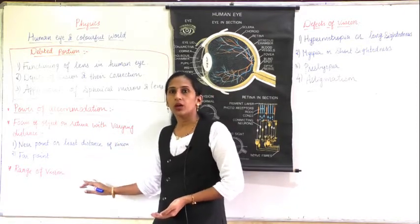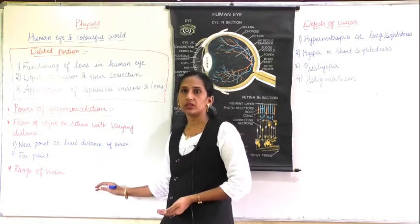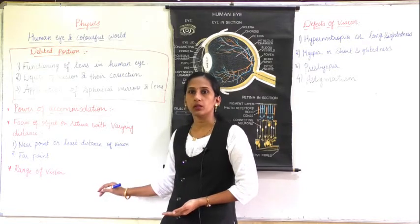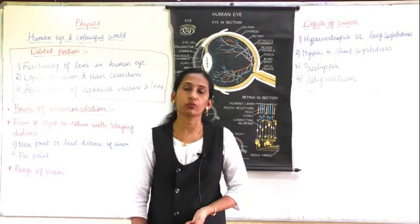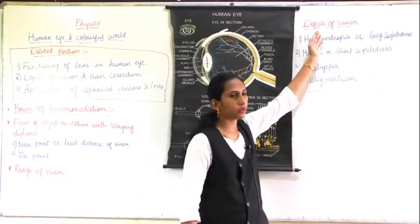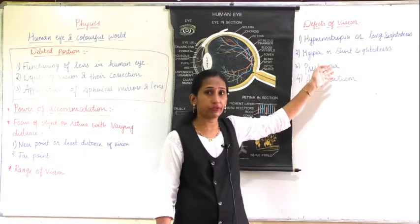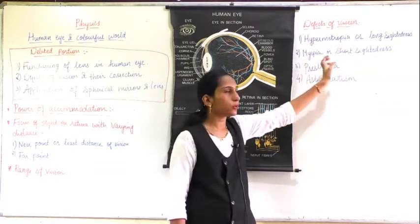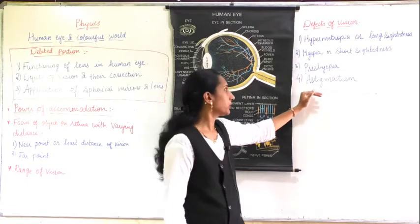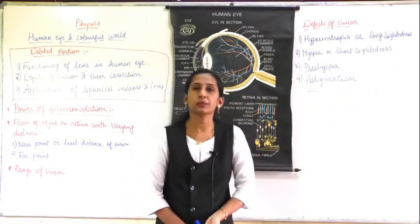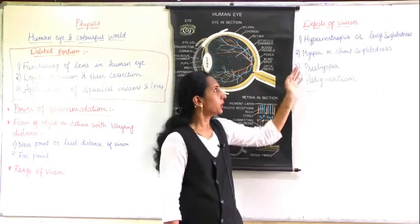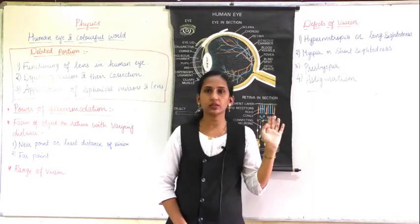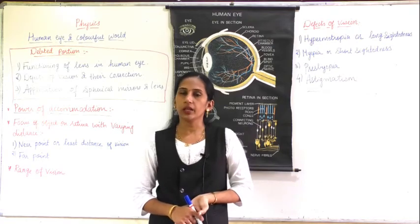This covers the normal eye terms — near point, far point, and range of vision — which are in your exam. Next you will study defects of vision. There are four types: hypermetropia (long-sightedness), myopia (short-sightedness), presbyopia, and astigmatism. These four defects will be explained in detail in the next video.